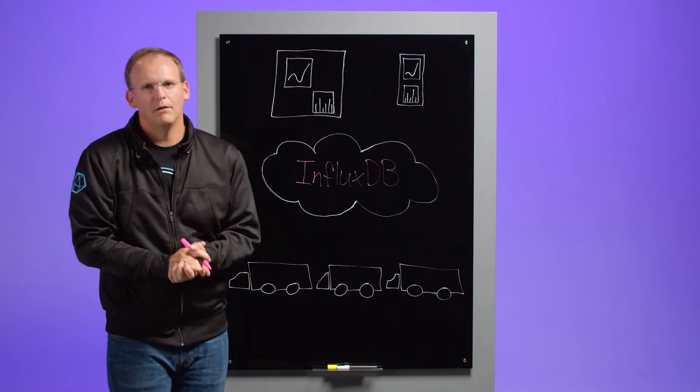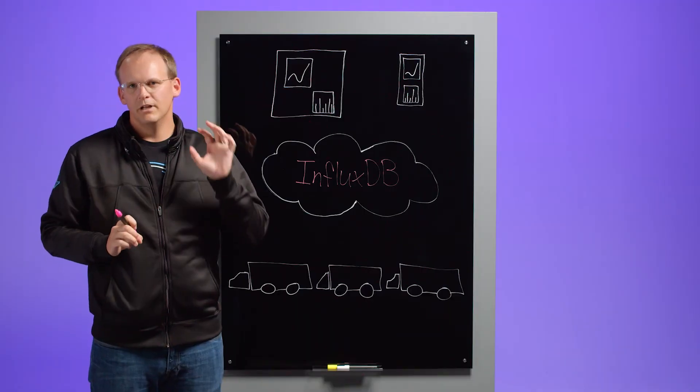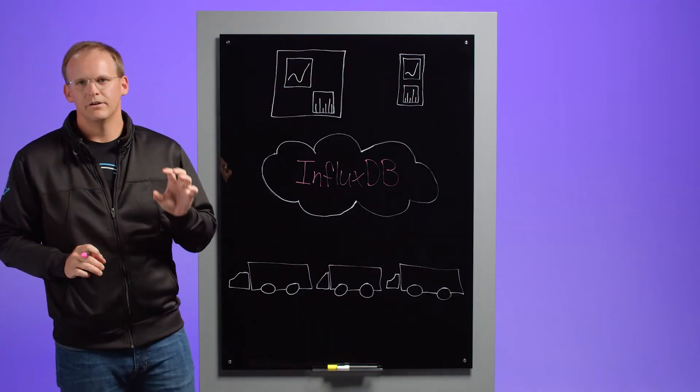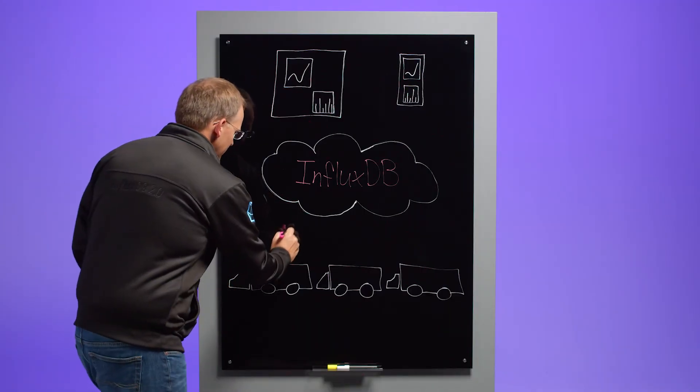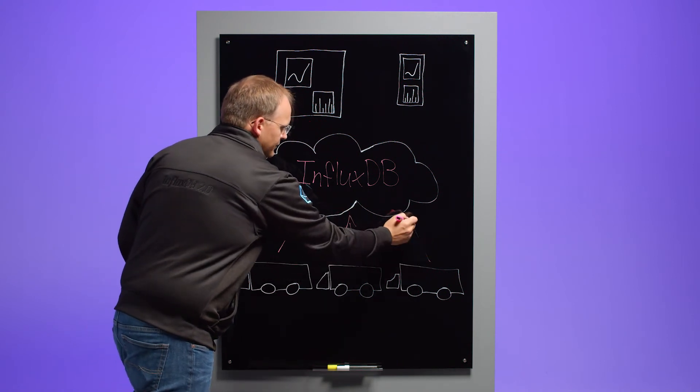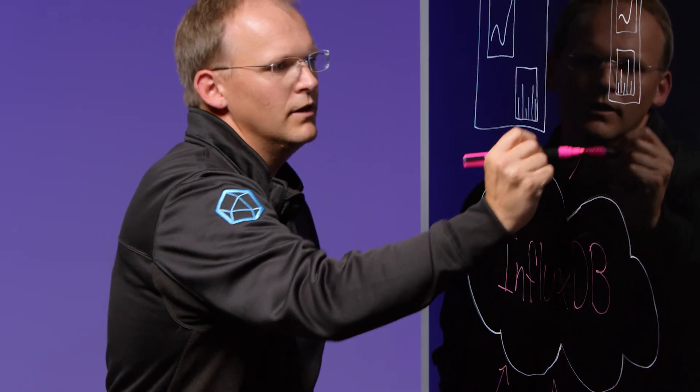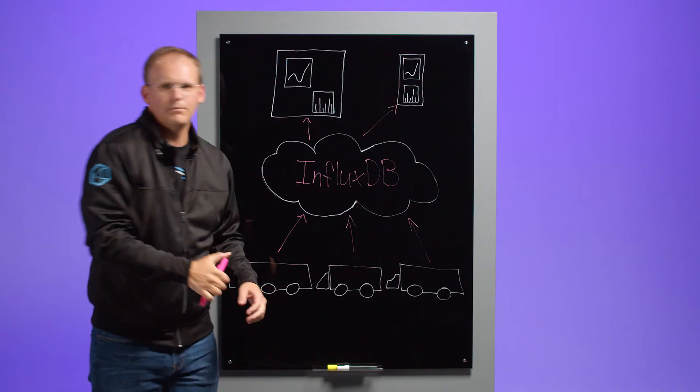This was the exact problem that WayConnect was facing when they were building their fleet management system. WayConnect is a French startup that is building a driver-centric fleet management system. They stream telemetry data from over 200,000 vehicles directly into InfluxDB and provide their users with a web UI and a mobile app for diagnosing problems with their fleet.